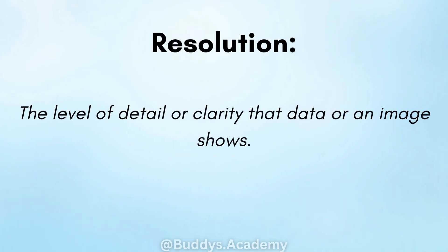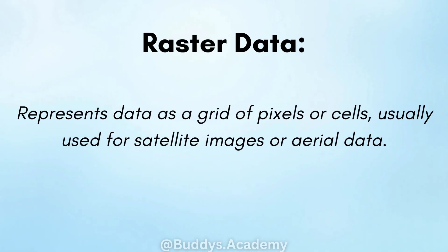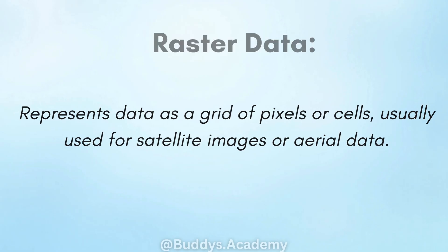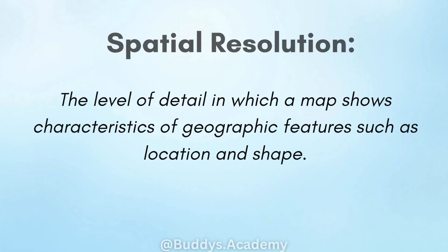Resolution: the level of detail or clarity that data or an image shows. Vector data: represents geographical features using points, lines and polygons — for example, a city as a point or a river as a line. Raster data: represents data as a grid of pixels or cells, usually used for satellite images or aerial data. Spatial resolution: refers to the level of detail in which a map shows characteristics of geographic features such as location and shape.